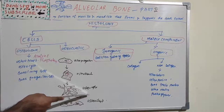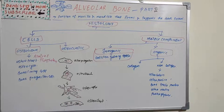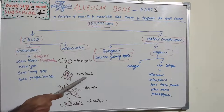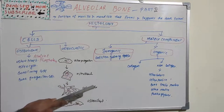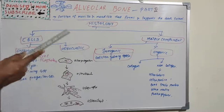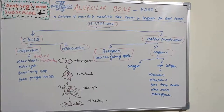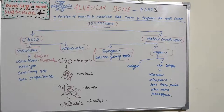Osteocytes are osteoblasts which are entrapped within bone. The entrapped osteoblast is known as an osteocyte. These cells have canaliculi and occupy spaces known as lacunae in bone, and are defined as cells surrounded by bone matrix.